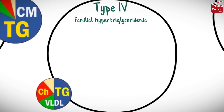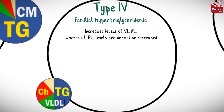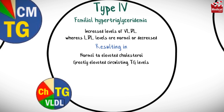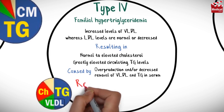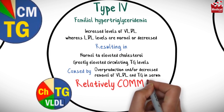Type 4 is familial hypertriglyceridemia, characterized by increased levels of VLDL whereas LDL levels are normal or decreased, resulting in normal to elevated cholesterol and greatly elevated circulating triglyceride levels. It is caused by overproduction and/or decreased removal of VLDL and triglycerides from serum. This is a relatively common disease.